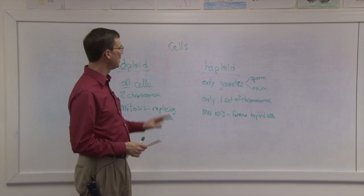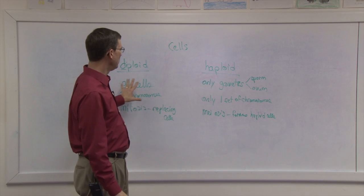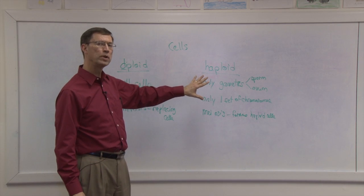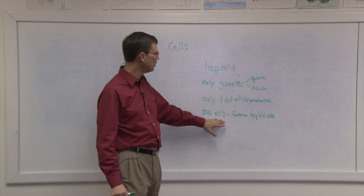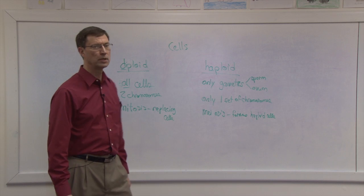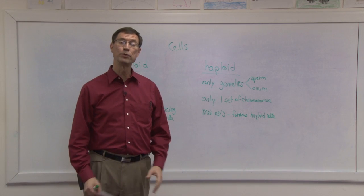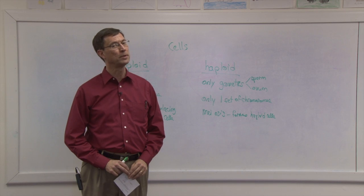Alright, I think that kind of summarizes the main difference between the diploid and the haploid, where these cells are located, and the type of reproduction that takes place. Meiosis for the haploid cells and mitosis for all the other cells of the body. And I hope that helps you as you study and prepare for this section and get ready for the first checkup in PACE 1107.